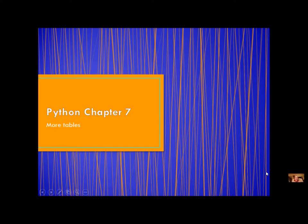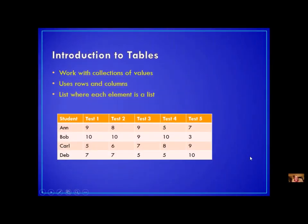For today's lesson we're going to talk more about tables. Let's start with a review from yesterday's lesson. We talked about what a table is — a table is something you use when you want to work with collections of values. You usually organize this collection using rows and columns. What you need is a list where each element in the list is a list; in other words, you create a list of lists.